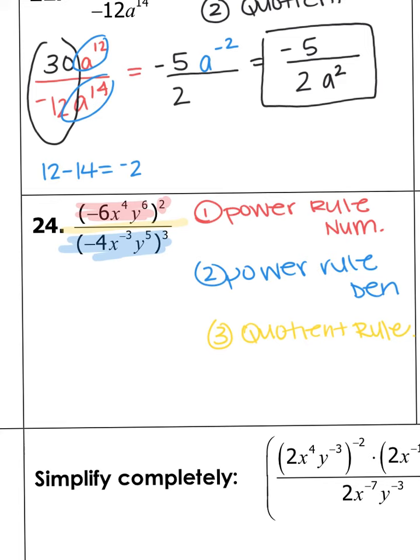That concludes your video on our last exponent rule. Keep in mind: any time you use the power rule, the product rule, or the quotient rule, your final answer cannot contain a negative exponent. Just flip it down to the denominator — it stays the same number, it just becomes positive. If you have any questions, let us know.